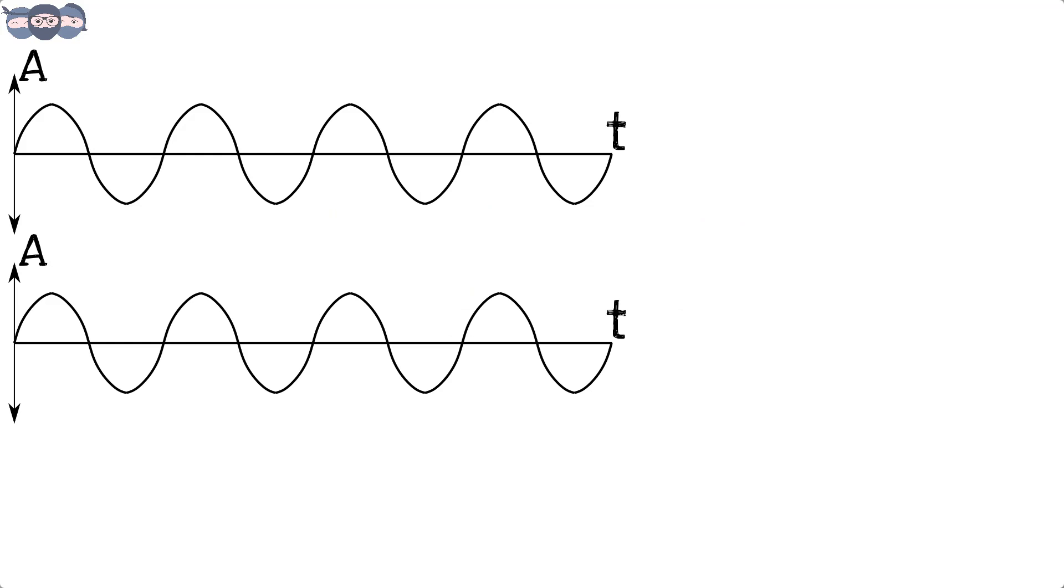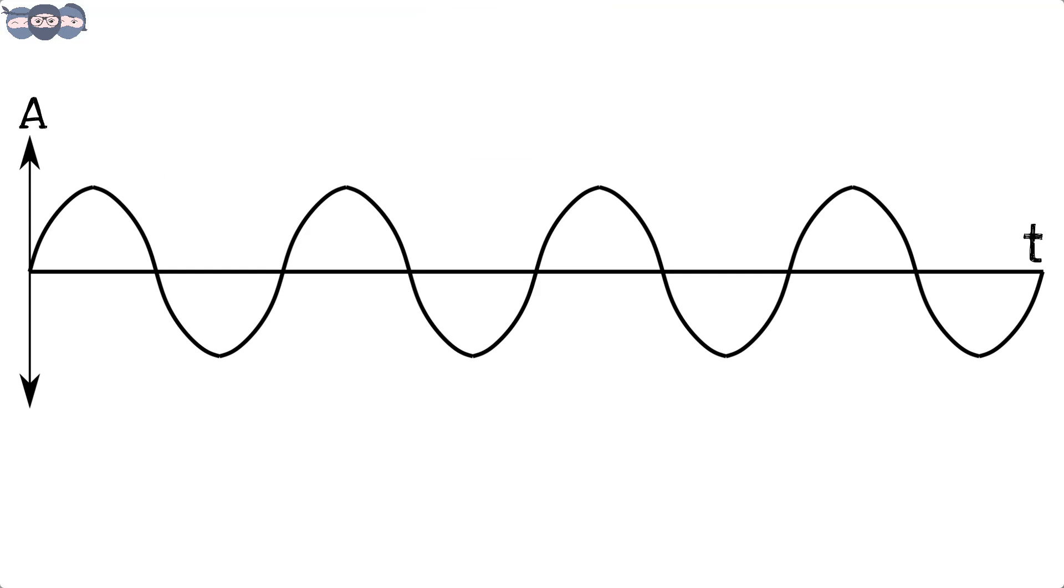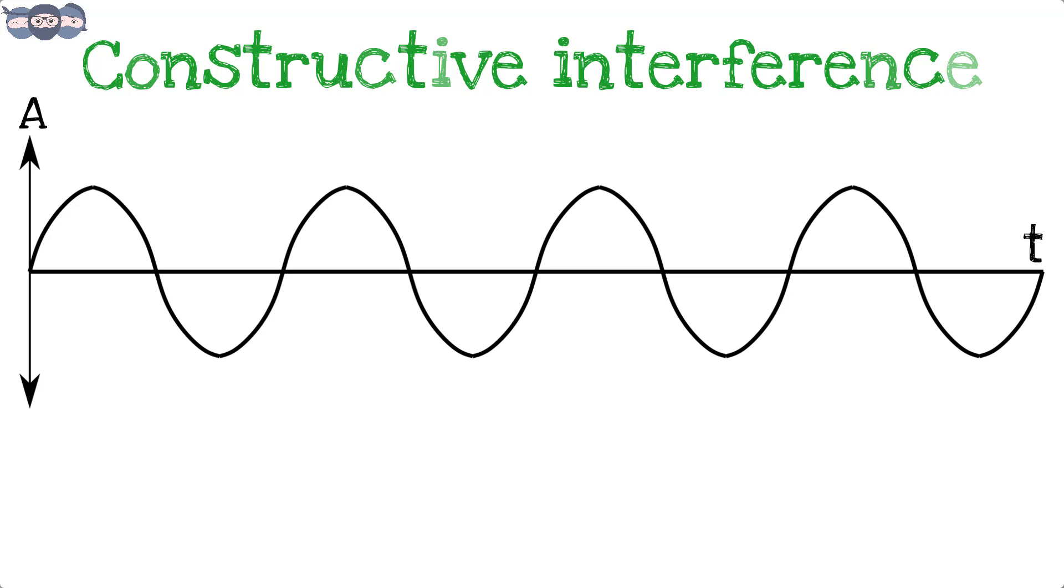Consider two sine waves. If the crest of one wave matches with the crest of another wave, the addition of these two waves creates a wave having a maximum amplitude. This phenomenon is called constructive interference.